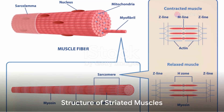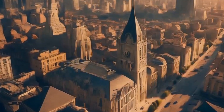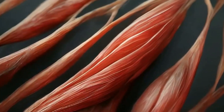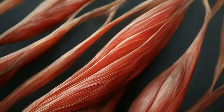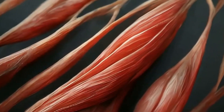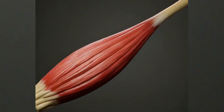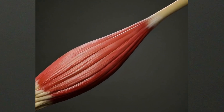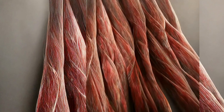Now, imagine a muscle as a city. The city is made up of numerous buildings, which we can liken to muscle fibers. These muscle fibers, or buildings, are long, cylindrical, and unbranched. They form the basic units of our muscles.